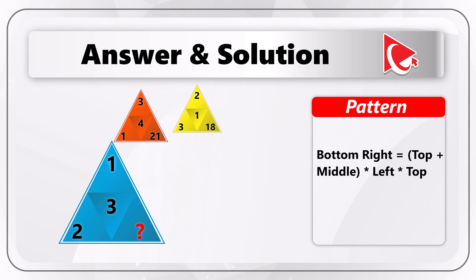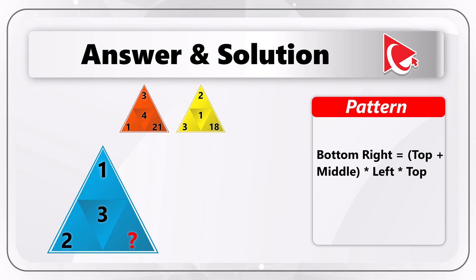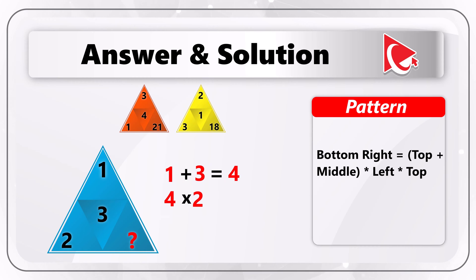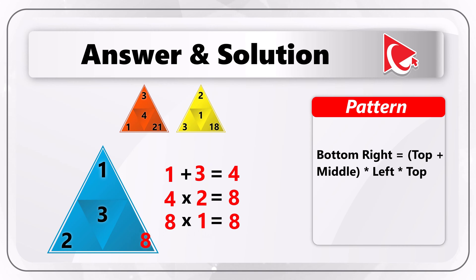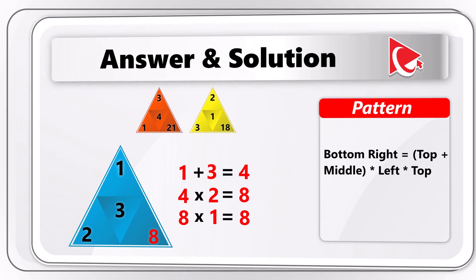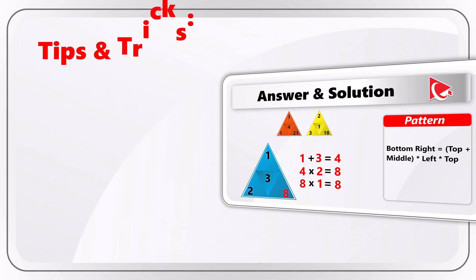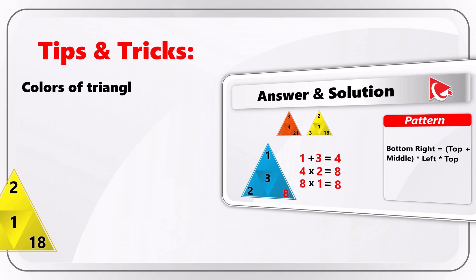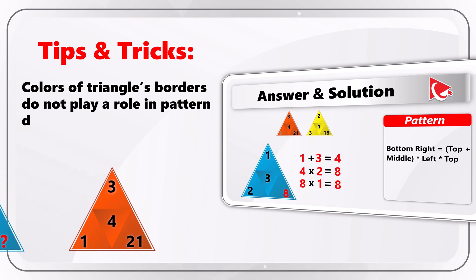Can you do the calculations for the third triangle? Let me help you. 1 plus 3 equals 4. 4 multiplied by 2 equals 8. And then 8 multiplied by 1 equals 8 again. So the correct answer here is choice A: 8.